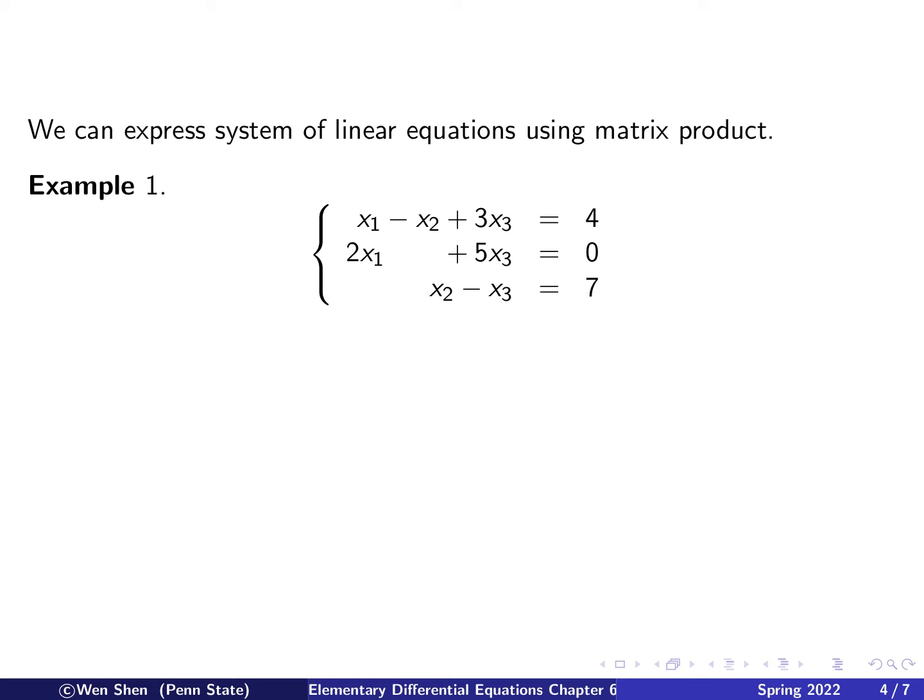Now the advantages of using matrices is that we probably have learned earlier in simultaneous linear equations that we can express systems of linear equations using matrix product. Let's see. We have this example. Three equations, three unknowns, x1, x2, and x3. And then each one has different coefficients to add up, and then there's the right-hand side for each of the equations. How can we write it into matrix and vectors?